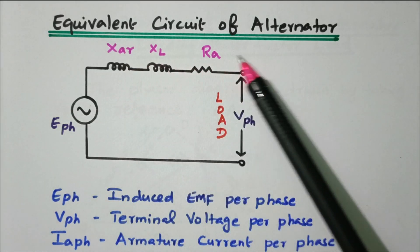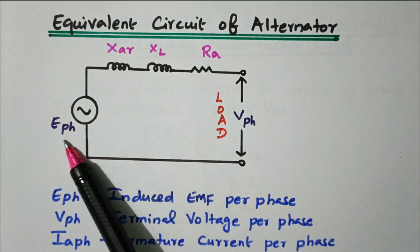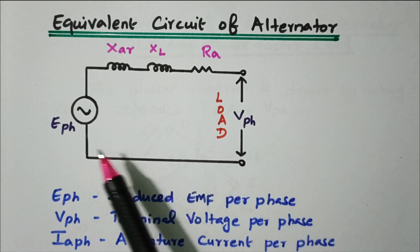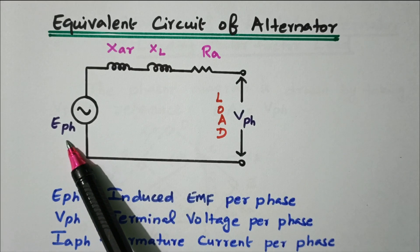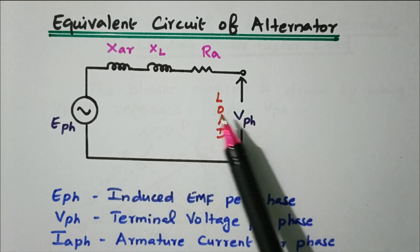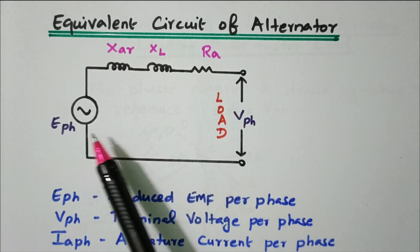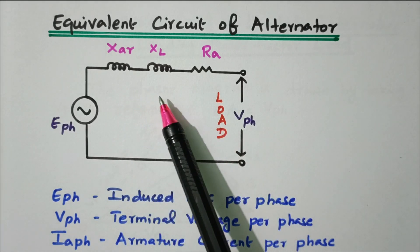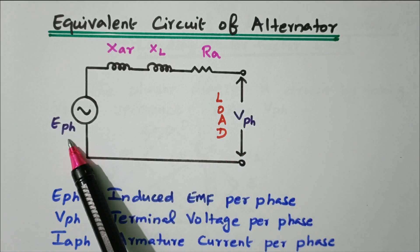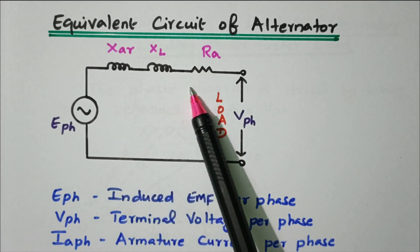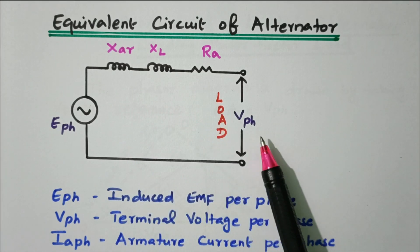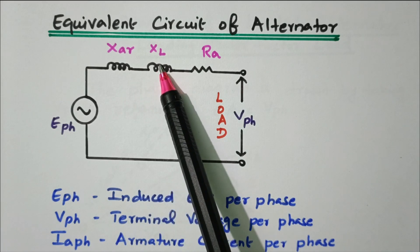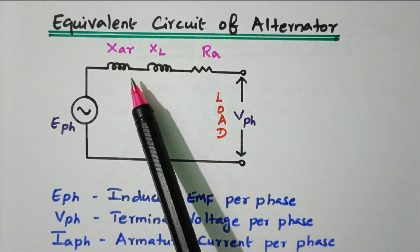This is the equivalent circuit of an alternator. E_phase is the voltage generated in the alternator; V_phase is the voltage available at the load terminal. The voltage generated in the alternator is not entirely available at the load end — some voltage is dropped across the armature resistance and reactance. XL is the leakage reactance, and XAR is the armature reaction reactance.